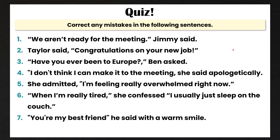Okay, let's correct these together. Number one is incorrect — we ended the quotation with a period, which is wrong. We have to change it to a comma because we have the speaker tag 'Jimmy said' at the end. Number two is correct. Number three is incorrect. 'Have you ever been to Europe?' Ben asked. This is a question, so we end it with a question mark and do not have a comma — just the quotation marks with no space between them.